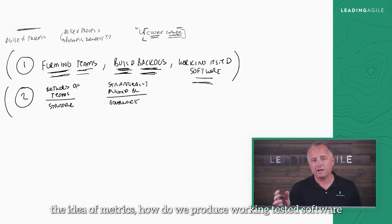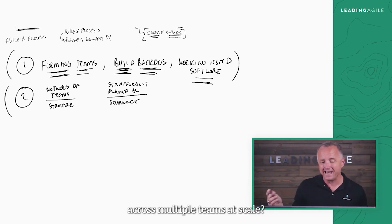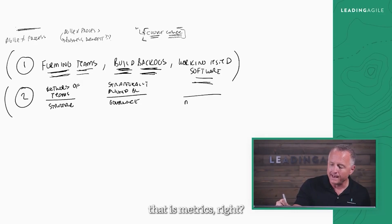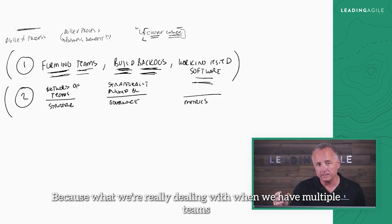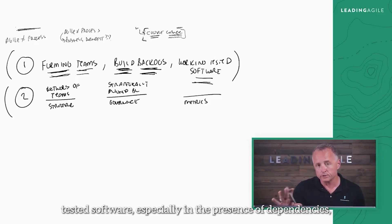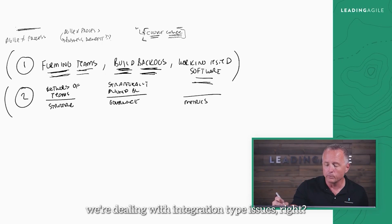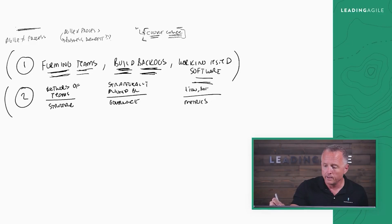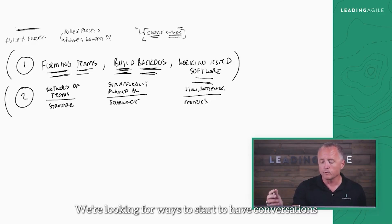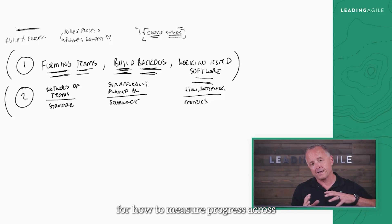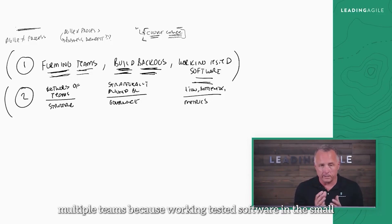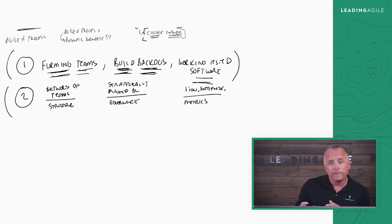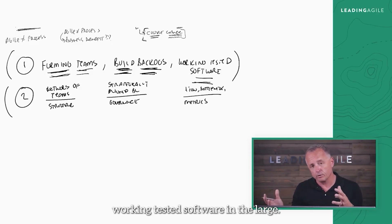And then there's the idea of metrics — how do we produce working-tested software across multiple teams at scale? When we have multiple teams all producing working-tested software, especially in the presence of dependencies, we're dealing with integration-type issues. We're looking for things like flow and bottlenecks, and ways to measure progress across multiple teams, because working-tested software in the small doesn't necessarily always imply working-tested software in the large.